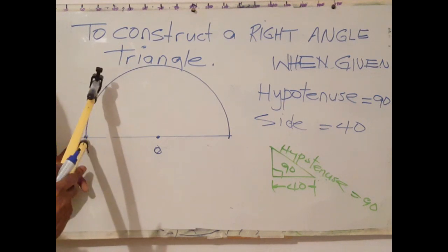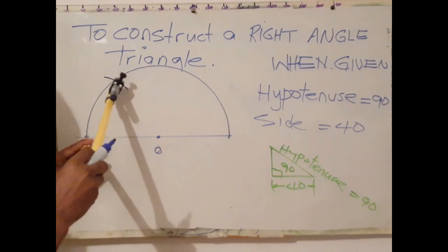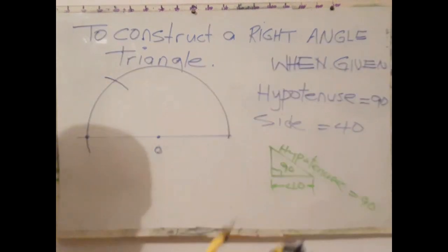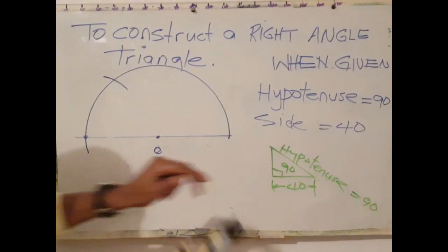Using this point as center, I draw an arc to cut the semicircle. The radius of this is 40 millimeters.